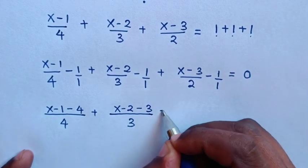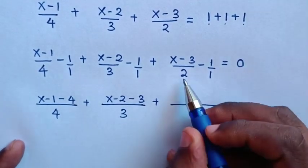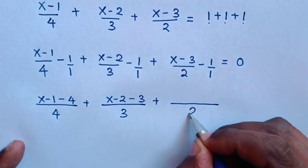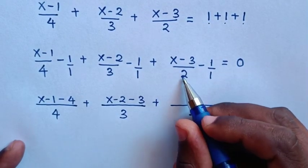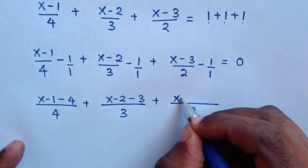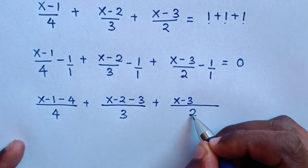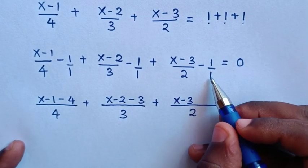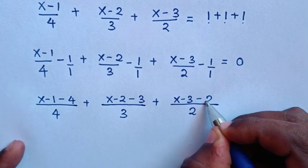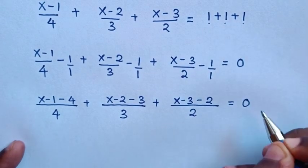Then plus, in this part, the denominator is 2 times 1, which is 2. 2 divided by 2 is 1, times x minus 3. Then 2 divided by 1 is 2, times 1 is 2, so it will be minus 2, is equal to 0.